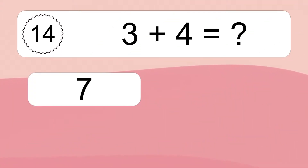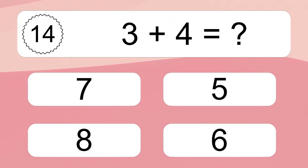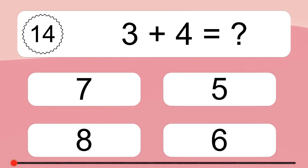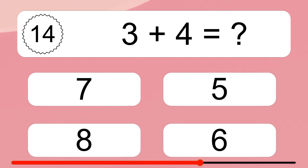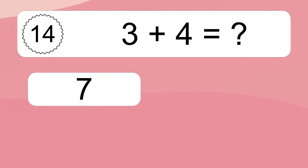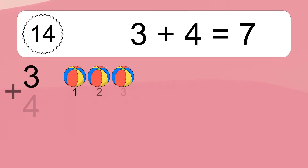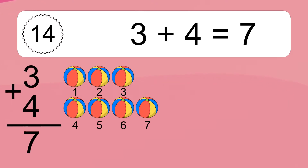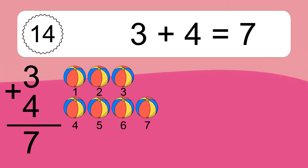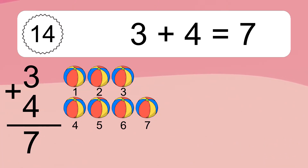3 plus 4 equals what? 3 plus 4 equals 7. Let's count it. 1, 2, 3, 4, 5, 6, 7.